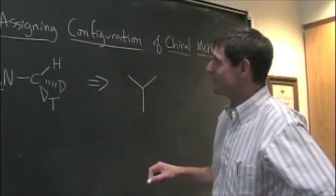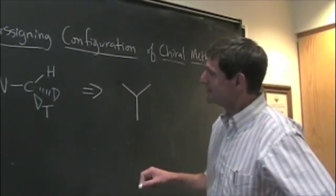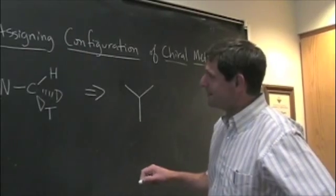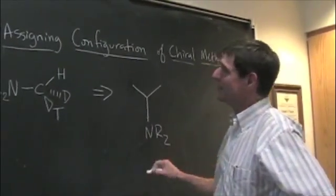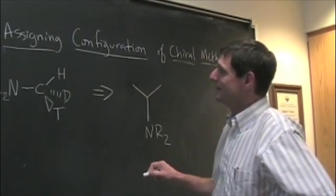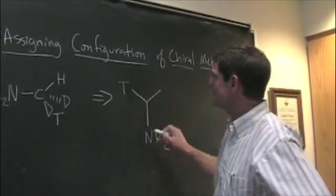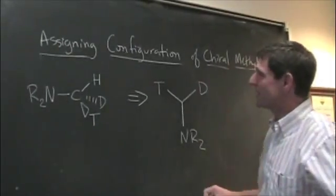And if we were to kind of translate this in our minds, we could put the nitrogen down low. It looks like the T is going to come up to the left and the D is going to come up to the right.